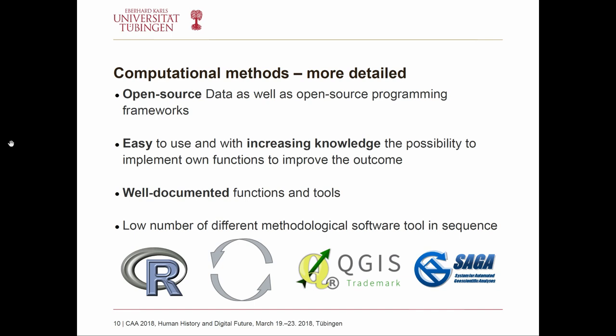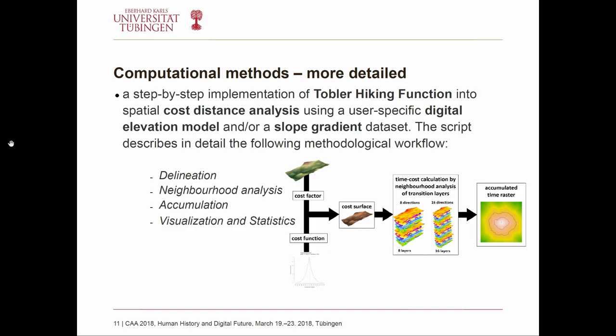In combination with a GIS system — also open source — we implemented the Tobler hiking function and cost distance analysis together in one R script. We use a user-specified digital elevation model or a slope gradient grid, which you can provide or calculate with the script. The workflow is: a cost factor (mainly the slope gradient grid), a cost function (the Tobler hiking function), combined into a cost surface analysis, then a cost distance analysis which generates an accumulated time raster. From this time raster you can easily extract isochrones representing the site exploitation territory — the area passable within a certain time.